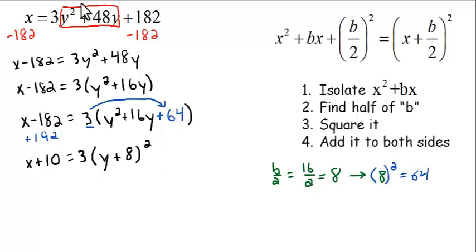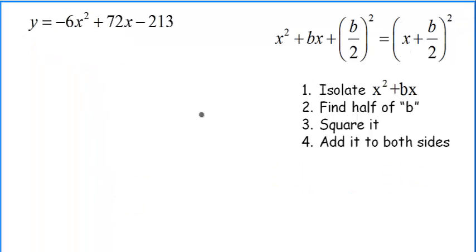We're squaring that, and that's the hard part. Let's get rid of the 10 by subtracting from both sides. The final answer for this problem is x = 3(y + 8)² - 10. And that's that problem.